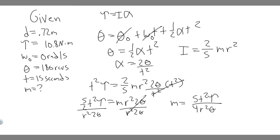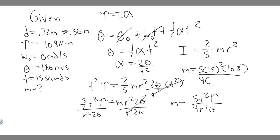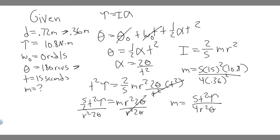Now we plug in the variables: m = 5 × 15² × 10.8, divided by 4 × r² × θ. The radius is half the diameter: r = 0.36 meters. We must also convert theta from revolutions to radians — 180 revolutions times 2π radians per revolution gives 360π radians. So theta equals 360π radians.